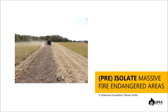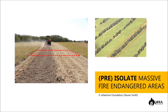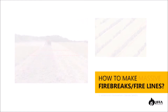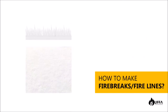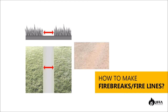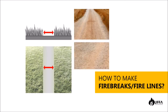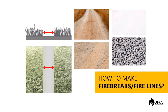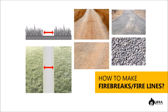Fire breaks are gaps in vegetation that act as a barrier to slow down or stop wildfire. The most effective fire lines are wide roads. However, hedges of trees can also work as a fire break. It is important to keep a wide distance between vegetation areas. Constructing fire breaks can be done using local materials like gravel, sand, or anything not suitable for vegetation.